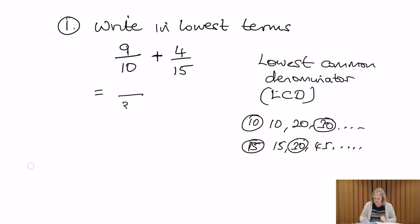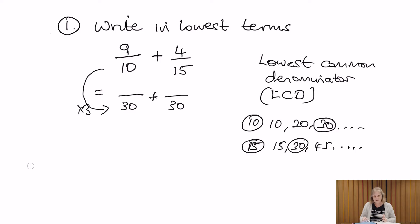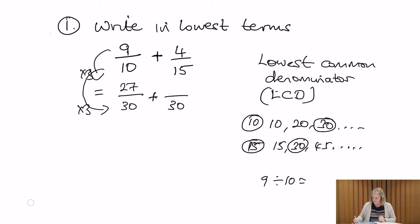Once we've identified that 30, we want to rewrite the fractions as what we call equivalent fractions — so we have a common denominator of 30 and we rewrite these fractions so they have the same value. Looking at 10: if we multiply 10 by 3, that gives us 30, so we have to do exactly the same to the numerator. 9 times 3 gives us 27, so this fraction is identical to 9 over 10. You can check that — 9 divided by 10 gives 0.9, and 27 divided by 30 also gives 0.9 if we've done it correctly.